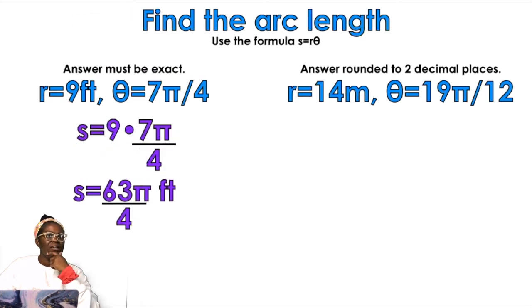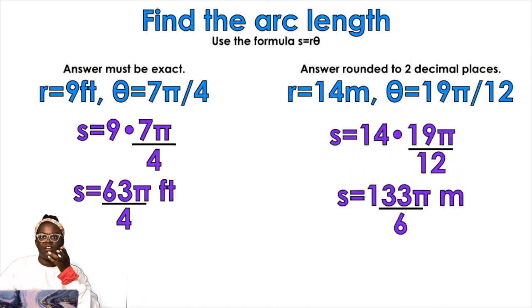63 pi over 4 and the same thing for the other one. 14 times 19 pi over 12. Just make sure you simplify correctly: 133 pi over 6 meters. That one needed to be rounded to two decimal places, so 69.60 meters.